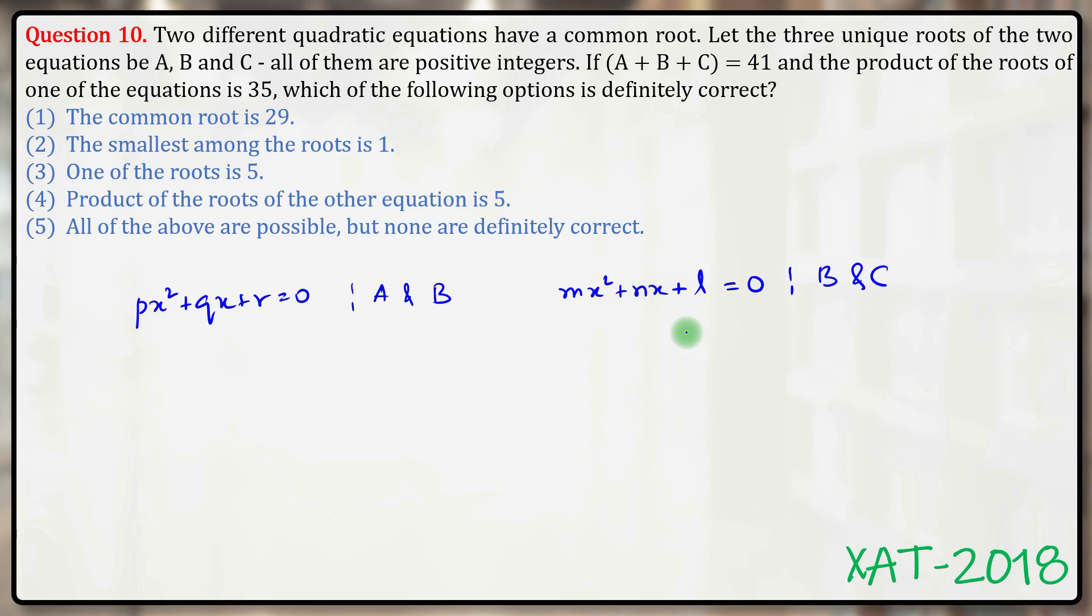If a + b + c = 41, that's a condition I need to keep in mind, and the product of roots of one of the equations is 35. Now it doesn't matter which equation I take. Let's say the first equation whose roots are a and b, their product is 35.